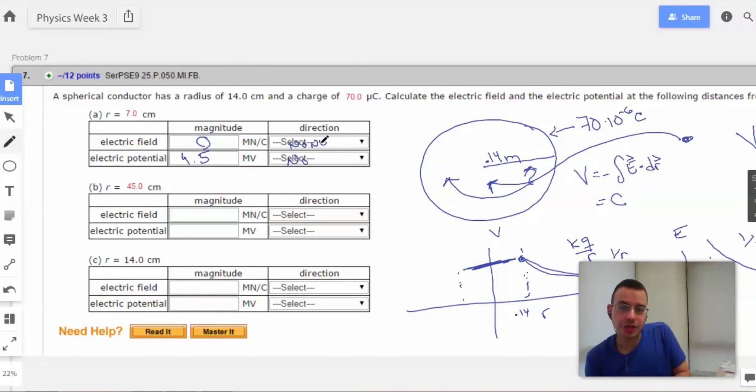And there's going to be no direction with the electric field either because it's 0. It can't have direction for something that doesn't exist.